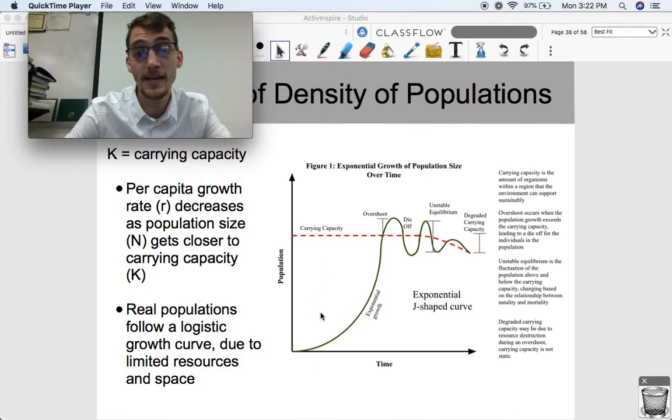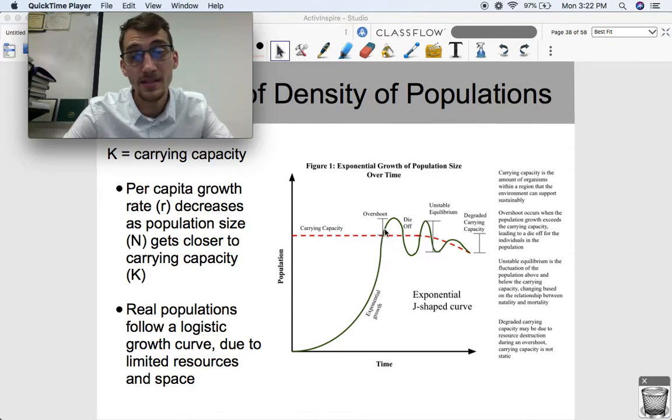A real population oftentimes will kind of fluctuate around the carrying capacity. So if this is a new population in an area, it will start to grow exponentially, reach carrying capacity, and then sometimes it will cause overshoot. Overshoot occurs when the population growth exceeds the carrying capacity, leading to a die-off.